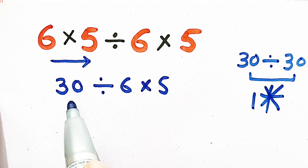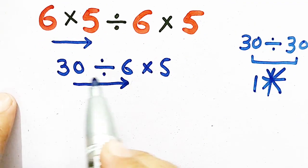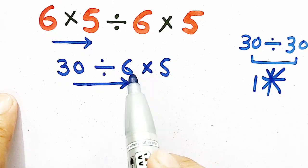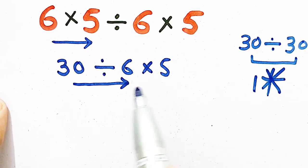Again, according to PEMDAS, we have to move from left to right. So, we will get 30÷6×5. 6×5 is 30, and 30÷30=1, but it is not correct.